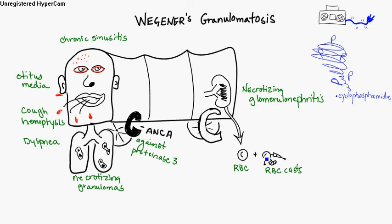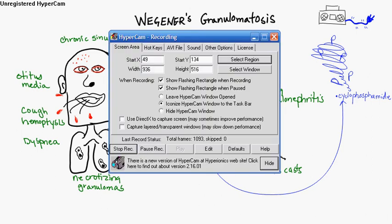One of the treatments is cyclophosphamide, and another is corticosteroids — so you've got both of them starting with a C, and that helps give you an idea of what this is.